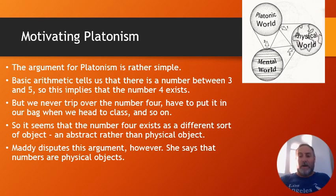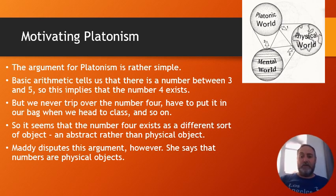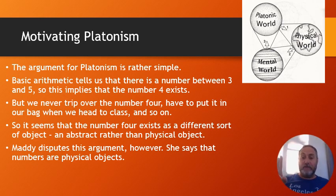Whatever abstract objects are — and as an aside, we've never gotten a great account of what they are. We're told what they aren't: things that exist that aren't physical, aren't spatio-temporal, aren't causally related to our world. We don't hear a lot about what they are. Maddie disputes this claim. She says numbers do exist, but they don't have to be abstract objects, which are sort of mysterious. Numbers can be just physical objects, and she's going to explain how that could work.